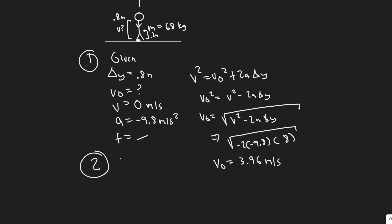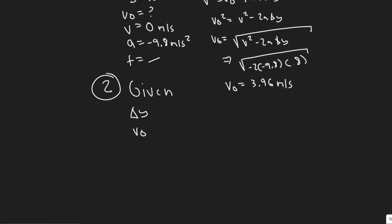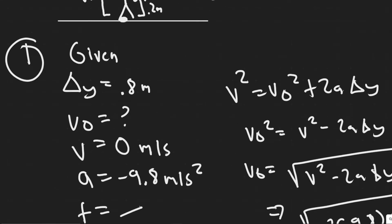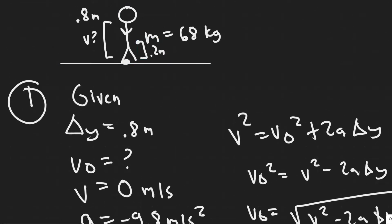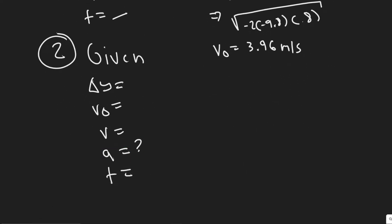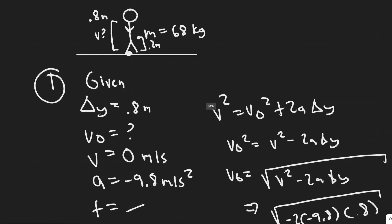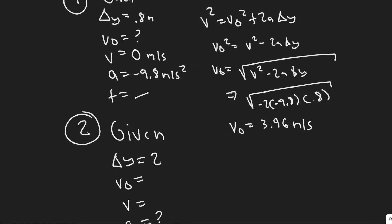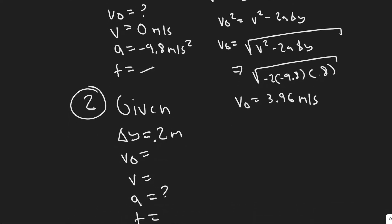The next part of this problem, we're going to do another kinematics problem, solving for a different interval and a different value. For this interval, writing down all the variables again: we're solving for the acceleration over the 0.2 meter interval — the acceleration they use in order to generate the force. Delta y is 0.2 meters because we're going upwards. The initial velocity in this interval is 0.